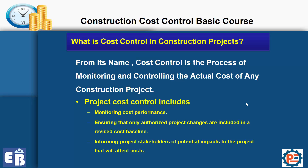The difference between cost control in the planning and controlling area and what the accounting department does is that the accounting department can tell you whether or not the project completed on budget — but only after an item is 100% completed or even after the whole project is finished. Whereas cost control gives you alarms from day one, and in this course we'll discuss how you can simply do it yourself.